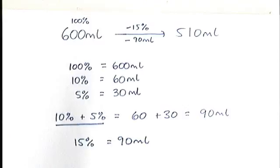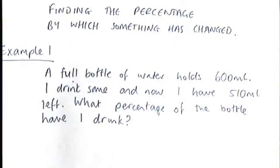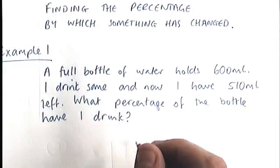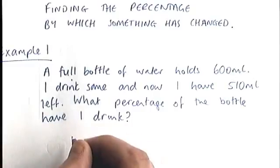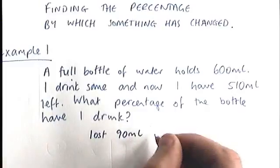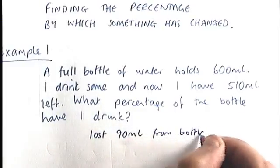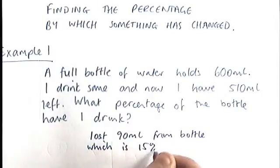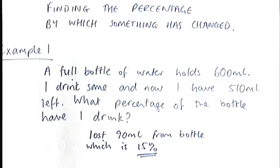And so if we go back to the question, which said the full bottle of water holds 600 milliliters, I drink some and now I have 510 milliliters left. What percentage of the bottle have I drunk? I can answer that question by saying I have lost 90 milliliters of water from the bottle, which is 15%. And that's it.